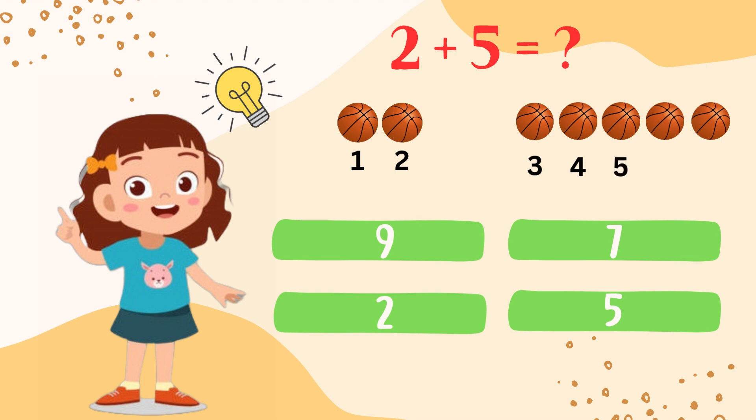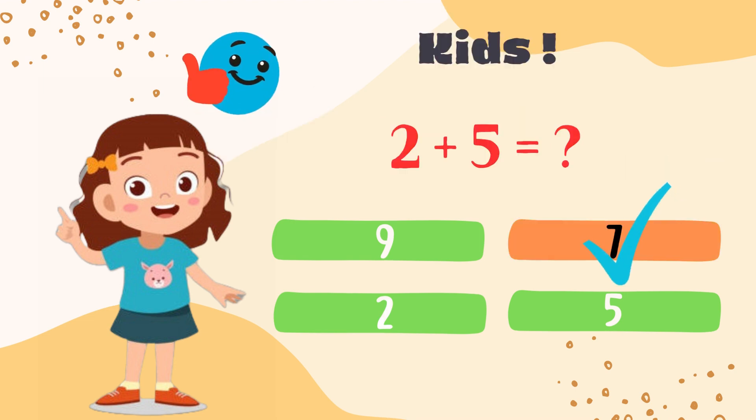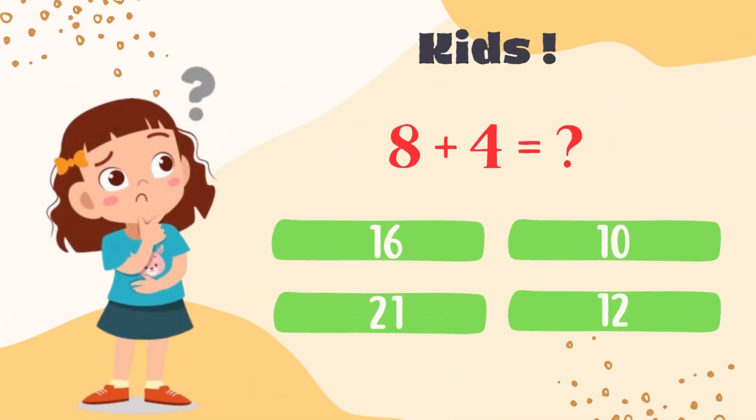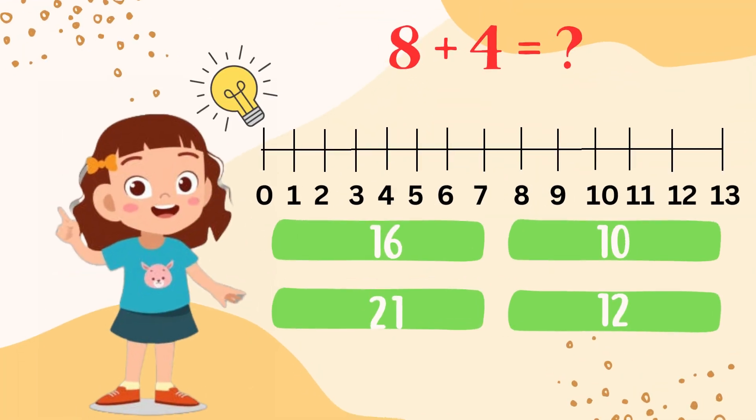6, 7. Great my dear kids, 2 plus 5 is 7. Kids, what is 8 plus 4? We will solve this by number line: 1, 2, 3, 4. So 8 plus